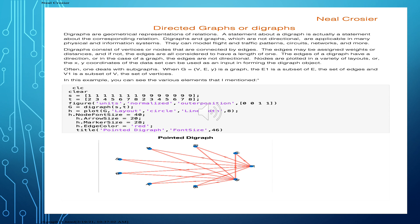This is a short study of directed graphs, or digraphs. Digraphs are geometric representations of relations. A statement about the digraph is actually a statement about the corresponding relation. Digraphs and graphs, which are not directional, are applicable in many physical and information systems. They can model flight and traffic patterns, circuits, networks, and much more.